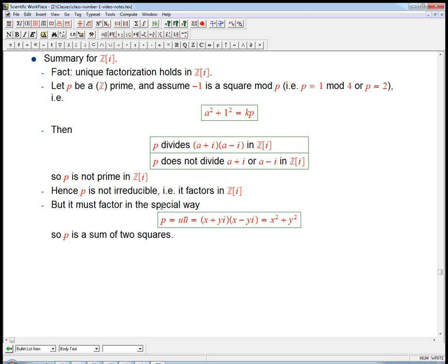It's not hard to show, that was the exercise from a few videos ago, that it must factor in the special way of u·ū, or x + yi, x - yi, and voila, we've exhibited p as the sum of two squares.